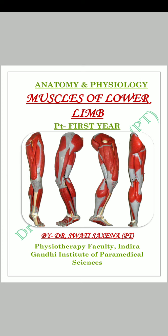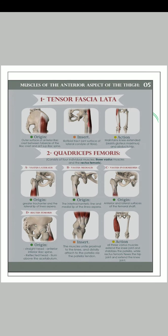We are studying about the muscles of the lower limb. In this series we have completed the muscles of the hip joint and muscles of the gluteal region. Today we will move towards the muscles of the thigh. If we talk about the thigh, there are four compartments: Anterior Compartment, Posterior Compartment, Medial Compartment, and Lateral Compartment. Today we will study the muscles of the anterior aspect of the thigh.